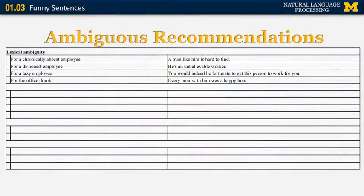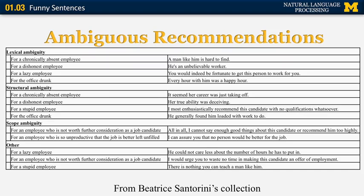Here are more examples of lexical ambiguities. For a dishonest employee you can say 'he's an unbelievable worker' — 'unbelievable' can mean somebody so good it's hard to believe they exist, or it can mean this person should never be believed. For a lazy employee you can say 'you would indeed be fortunate to get this person to work for you' — 'fortunate' can mean you will be happy to work with this person, or it would be a miracle if this person got to work for you.